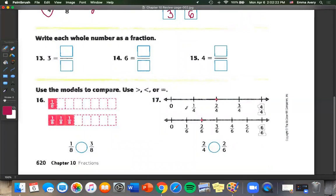Number 13, write each whole number as a fraction. So these are whole numbers. So we're going to have a one on the bottom for each one of these. So three, we're going to put a three on top, six on top, and a four on top.